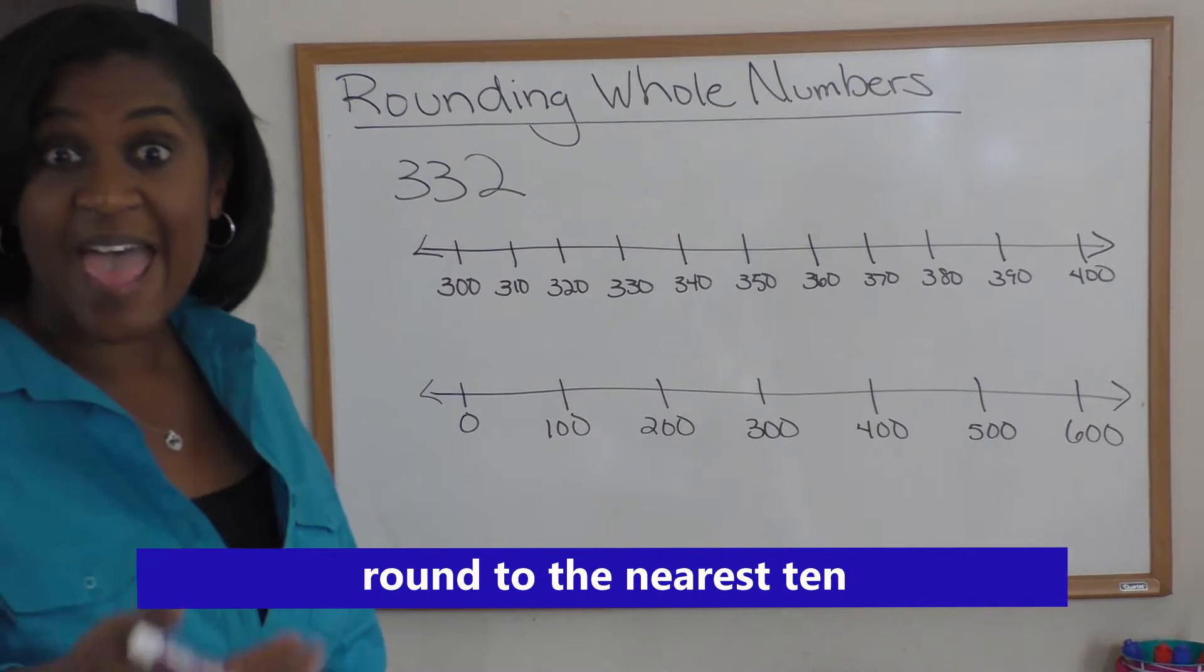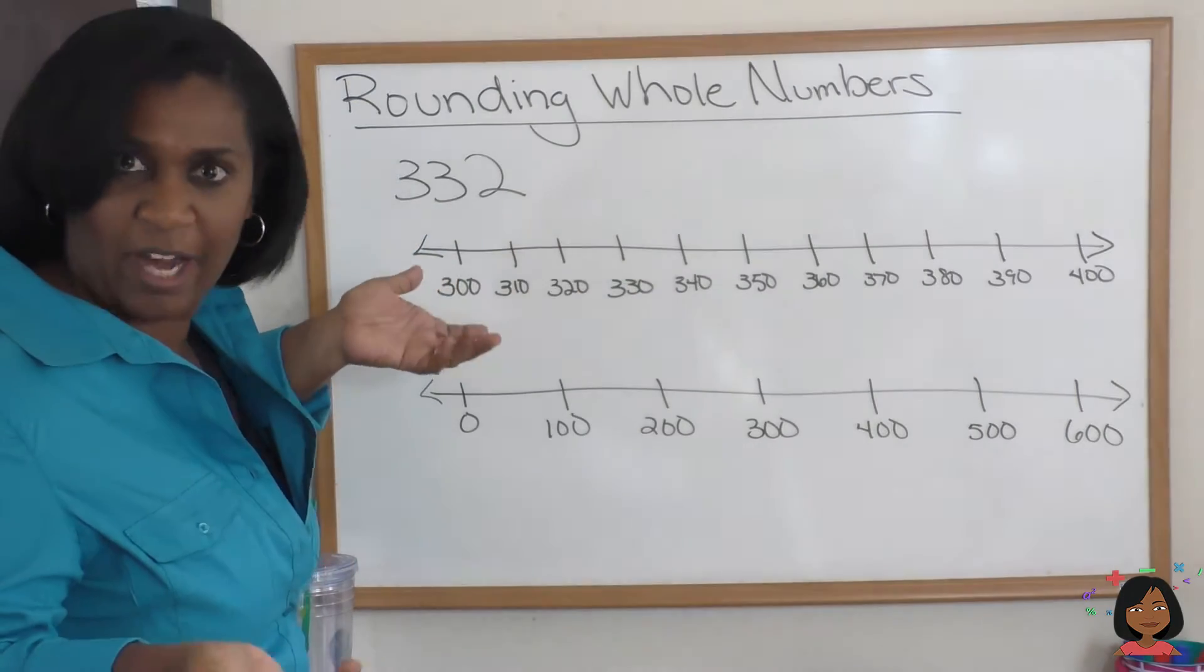So if I said to you, I want you to round this whole number to the nearest 10, that means we're looking at the top number line. 332, where does that fall on the number line? That falls between 330 and 340.